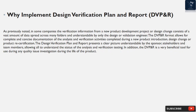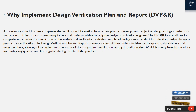Why implement DVP&R? In some companies, the verification information from a new product development project or design change consists of a vast amount of data spread across many folders, understandable by only the design or validation engineer. The DVP&R format allows for complete and concise documentation of the analysis and verification activities completed during a new product introduction, design change, or product recertification. The DVP&R presents a clear picture understandable by sponsors, stakeholders, and team members, allowing all to understand the status of analysis and verification testing. It is also a very beneficial tool for use during any quality issue investigation during the life of the product.